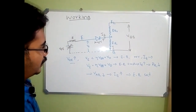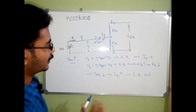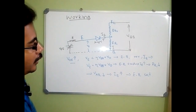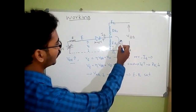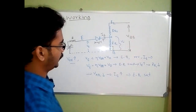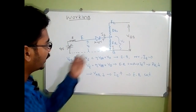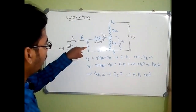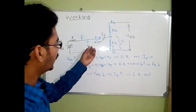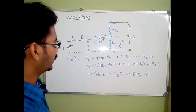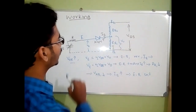When saturation occurs, the resistance cannot decrease any further — it attains its minimum value. At that point, the voltage across the device is called the valley voltage VV. This is how a UJT is turned on: by applying an emitter-base voltage equal to eta*VBB plus VD. The cumulative regenerative process continues until the voltage attains the valley voltage VV.